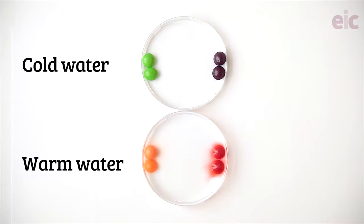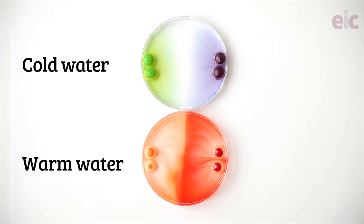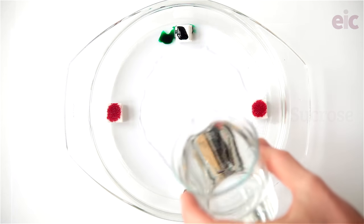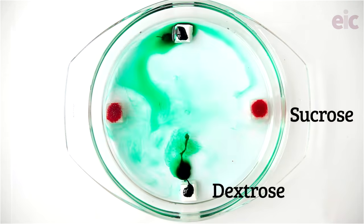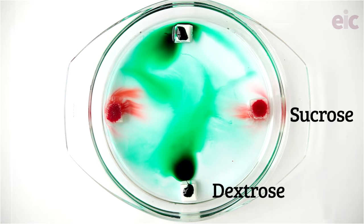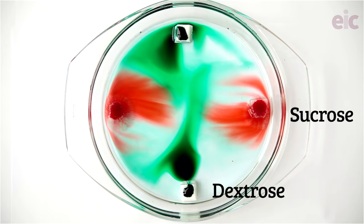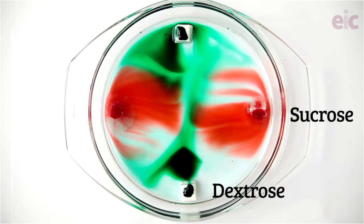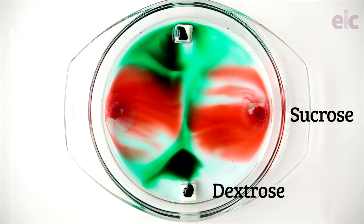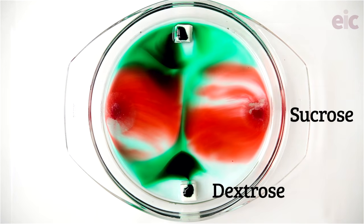Once you get the idea that the particles are moving, you can play with other variables. What happens with warm water versus cold water? Does the type of sugar play a role? Here I've compared some dextrose tablets with some sugar cubes. I thought that the lighter dextrose molecules might move more slowly or that the colors might appear to mix more readily, but the rate at which the original tablet dissolves is also different. With so many variables to play with, this doesn't just make for a great demonstration — it can really stimulate ideas for simple but effective investigations.